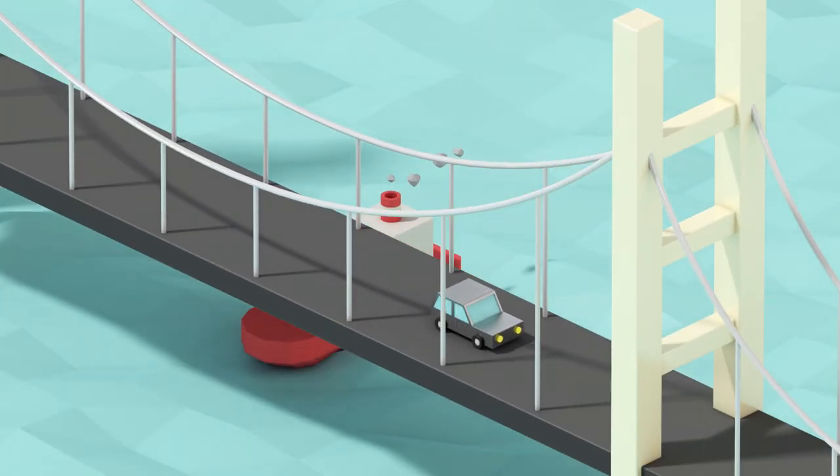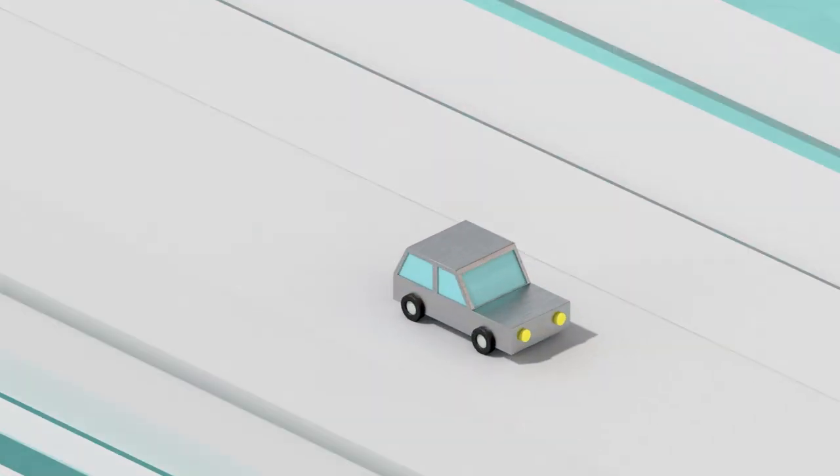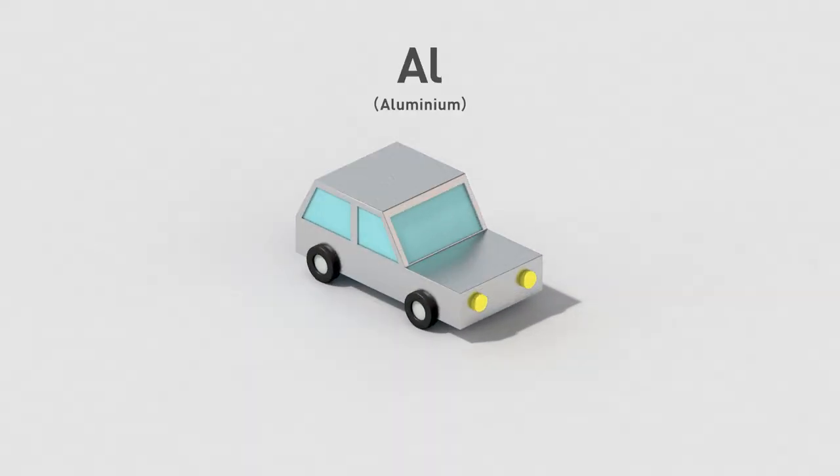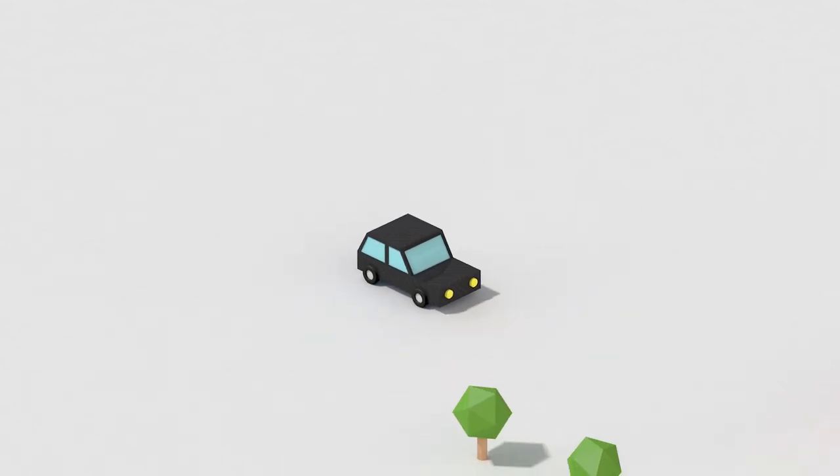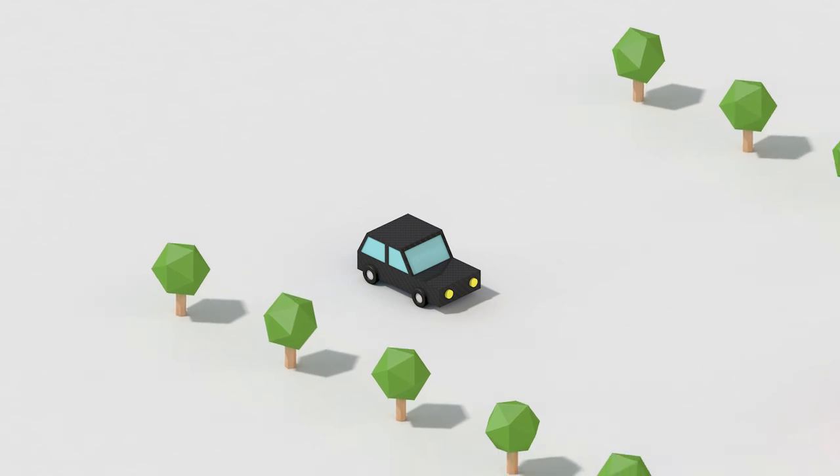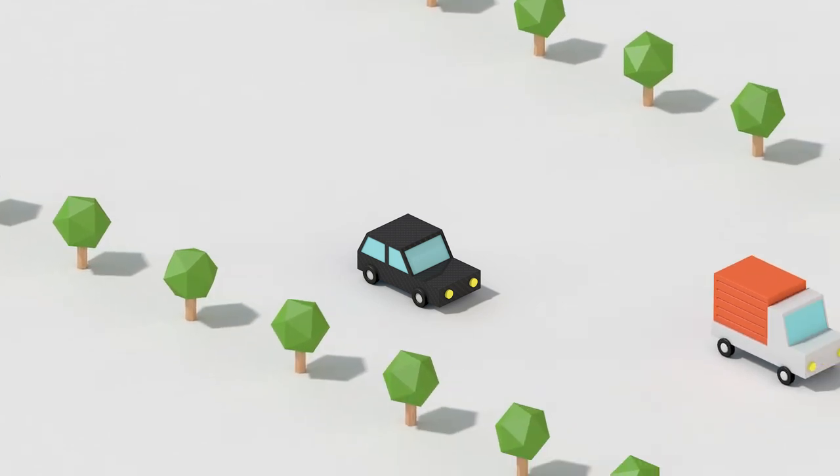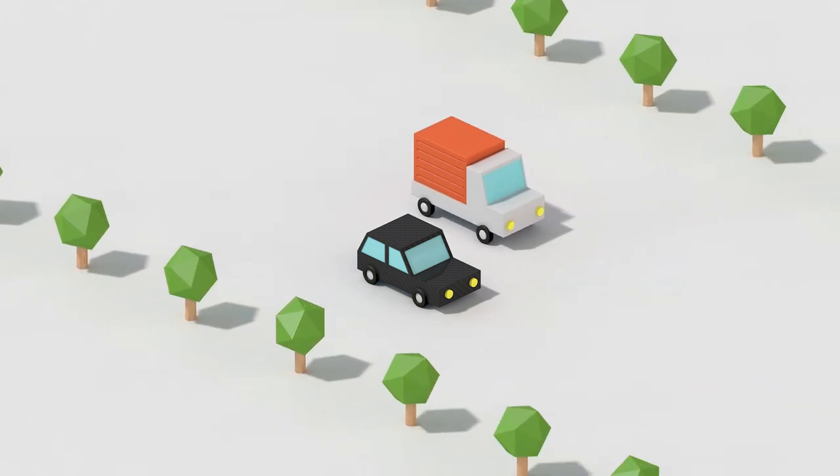Cars have been made of steel, but recently some cars are made using lighter materials, such as aluminum and carbon fiber. This is because lighter cars can travel further with less fuel. Some people think such cars are more environmentally friendly.